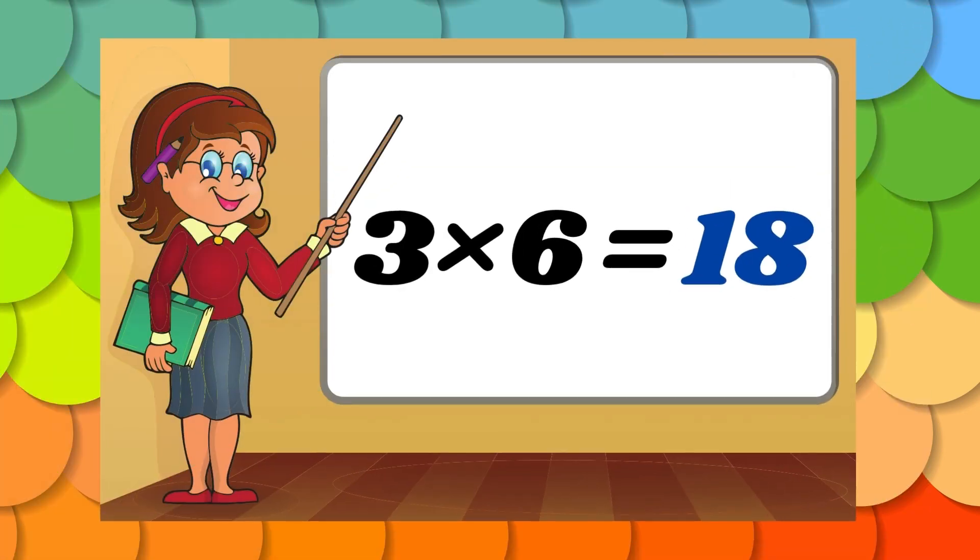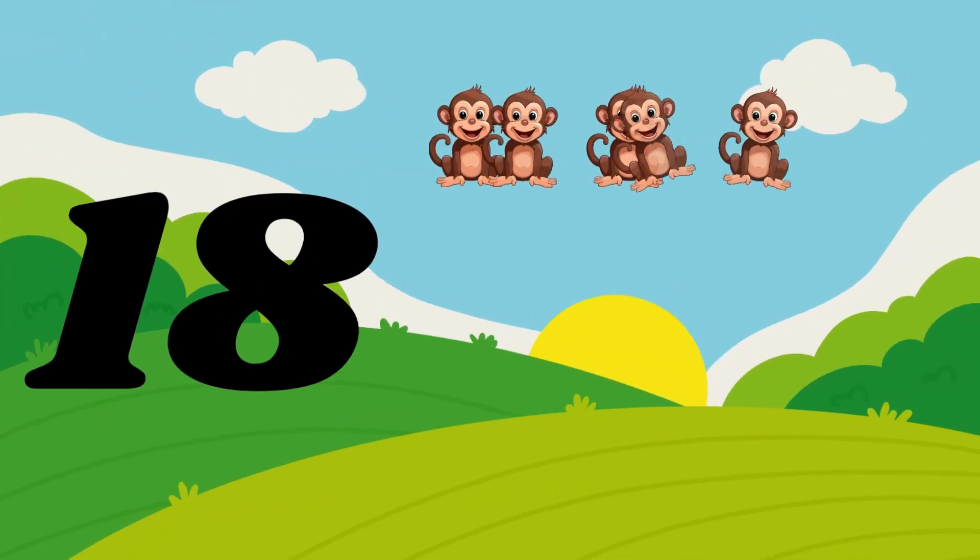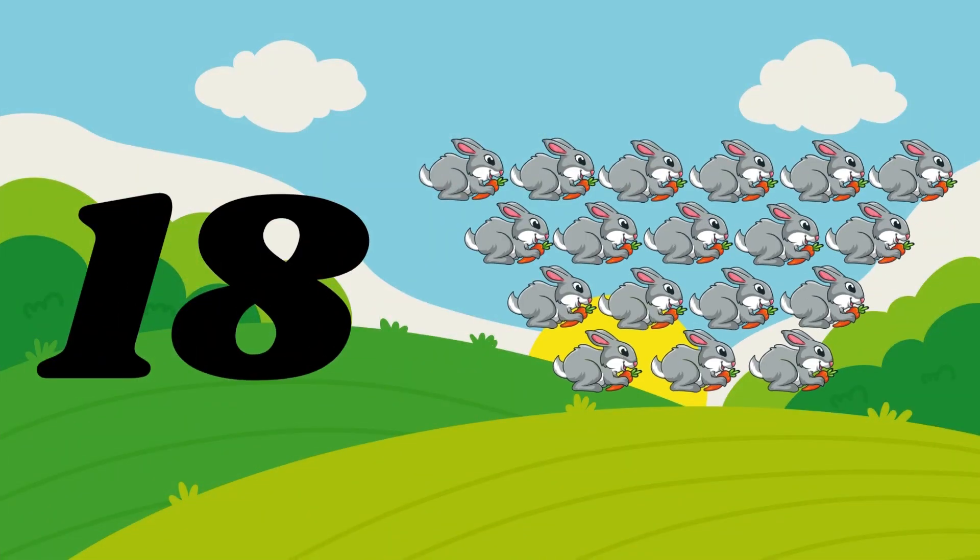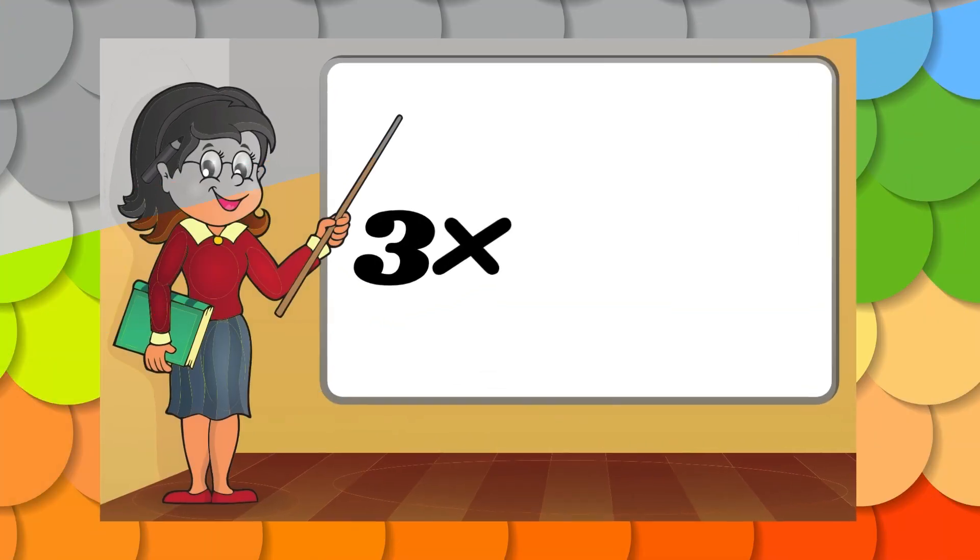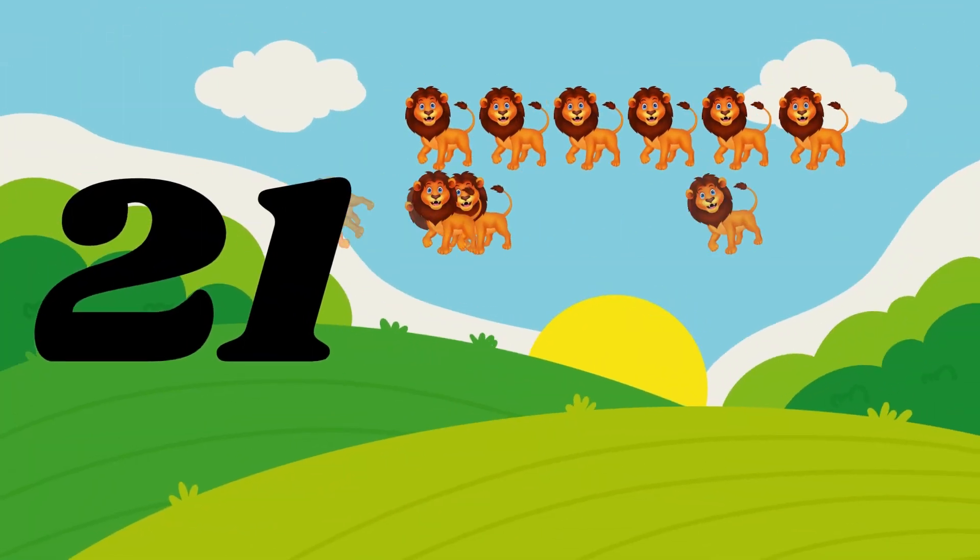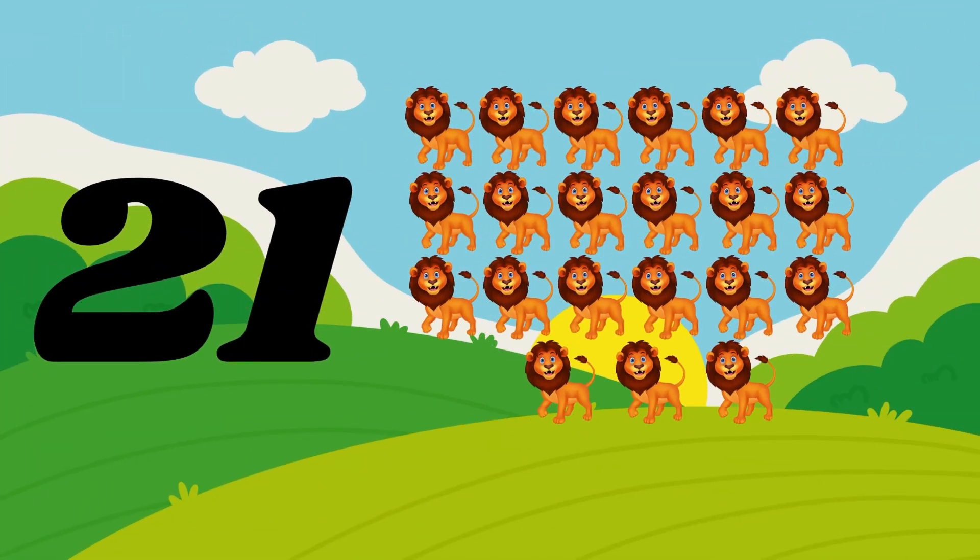Three sixes are eighteen. Eighteen monkeys, eighteen rabbits. Three sevens are twenty-one. Three sevens are twenty-one. Twenty-one lions.